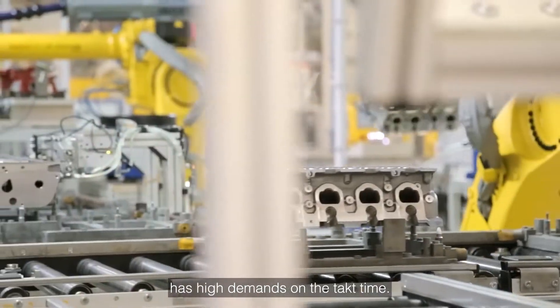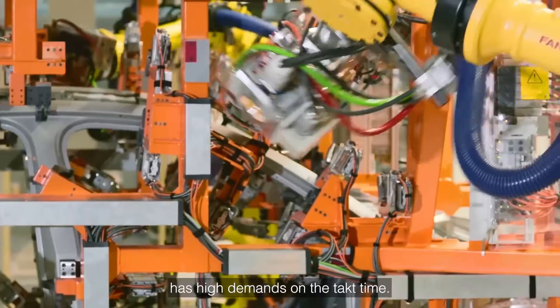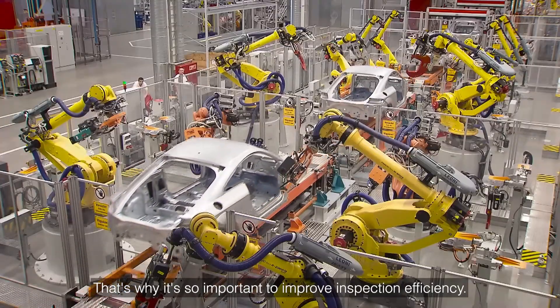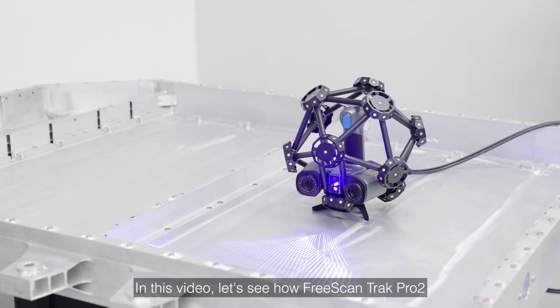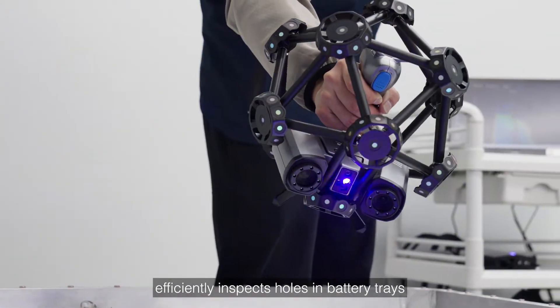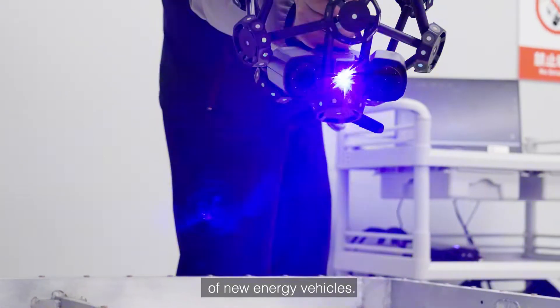The production of new energy vehicles has high demands on the tack time. That's why it's so important to improve inspection efficiency. In this video, let's see how FreeScan Track Pro 2 efficiently inspects holes in battery trays of new energy vehicles.